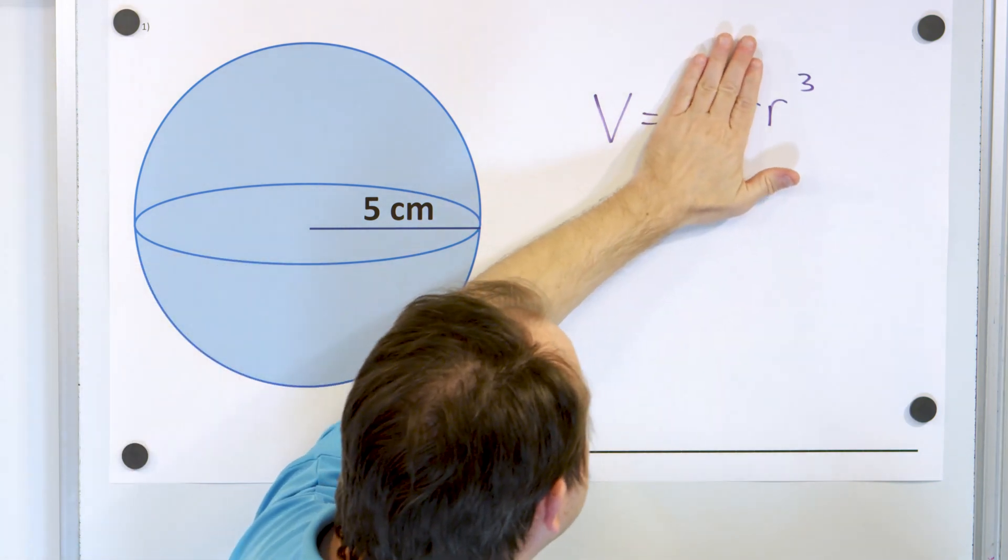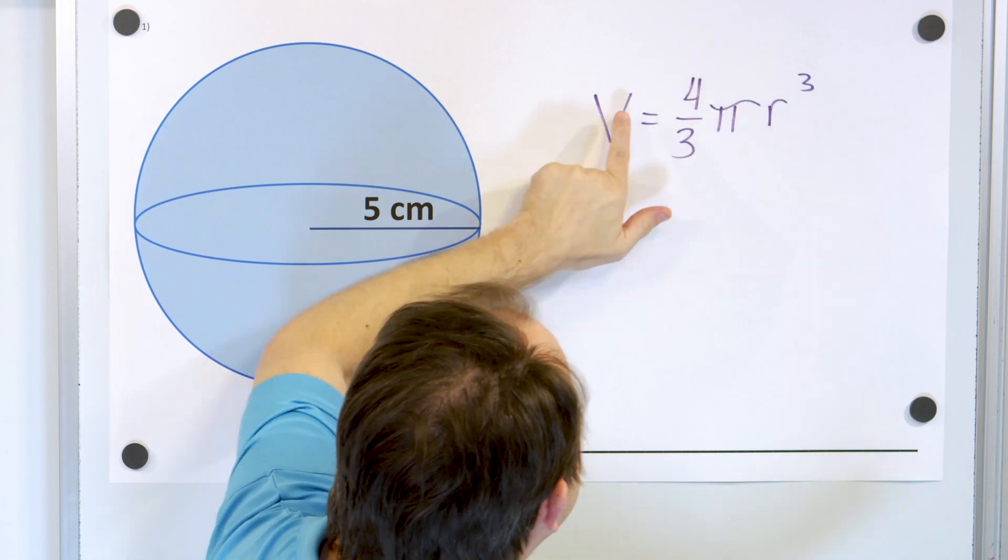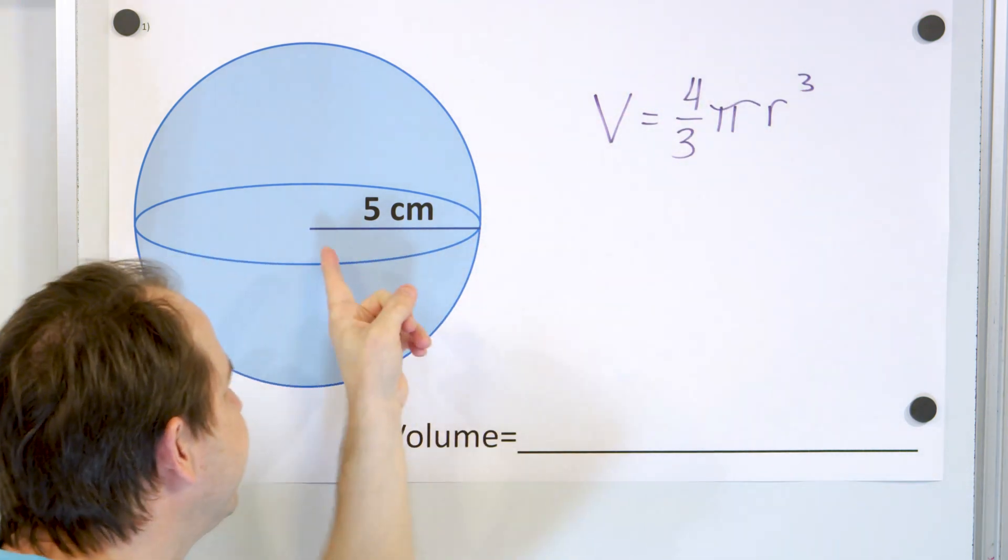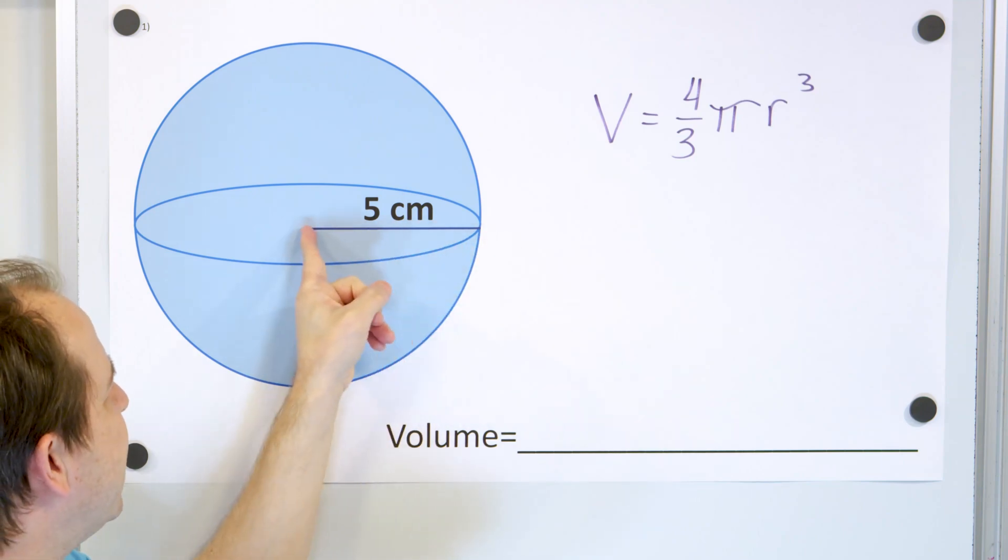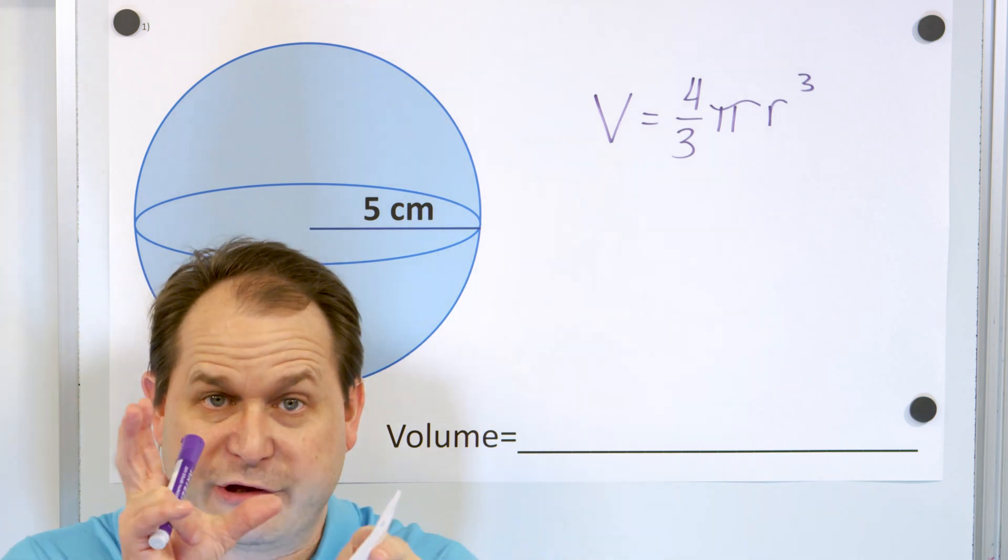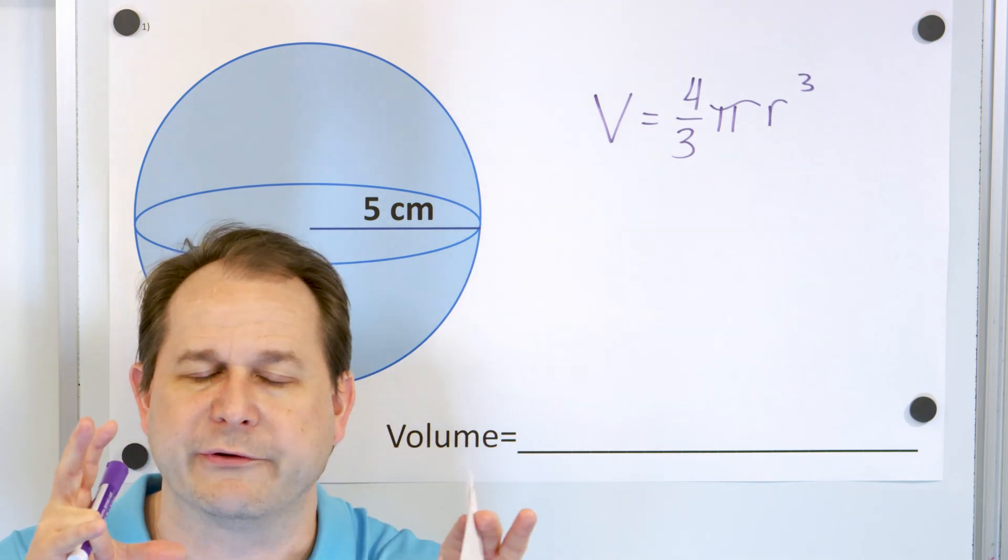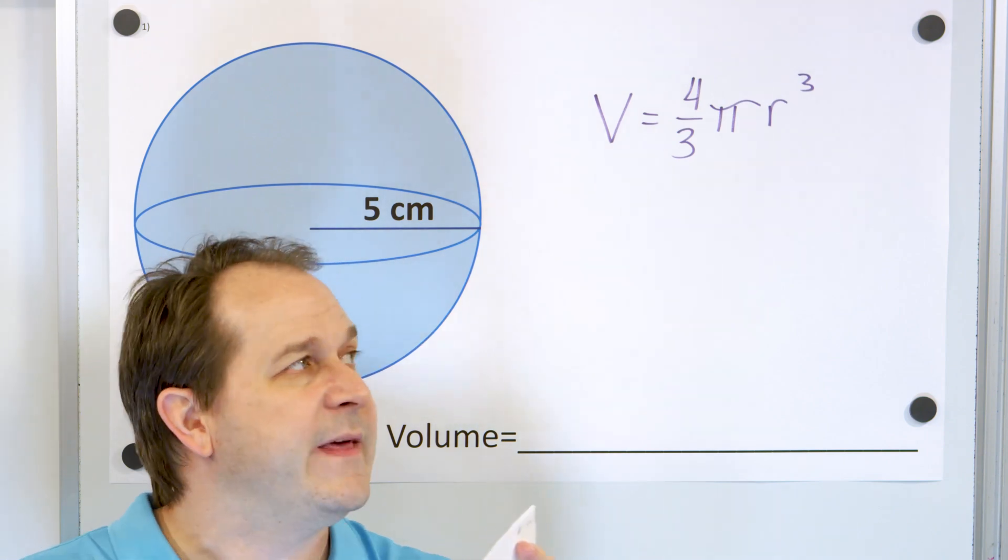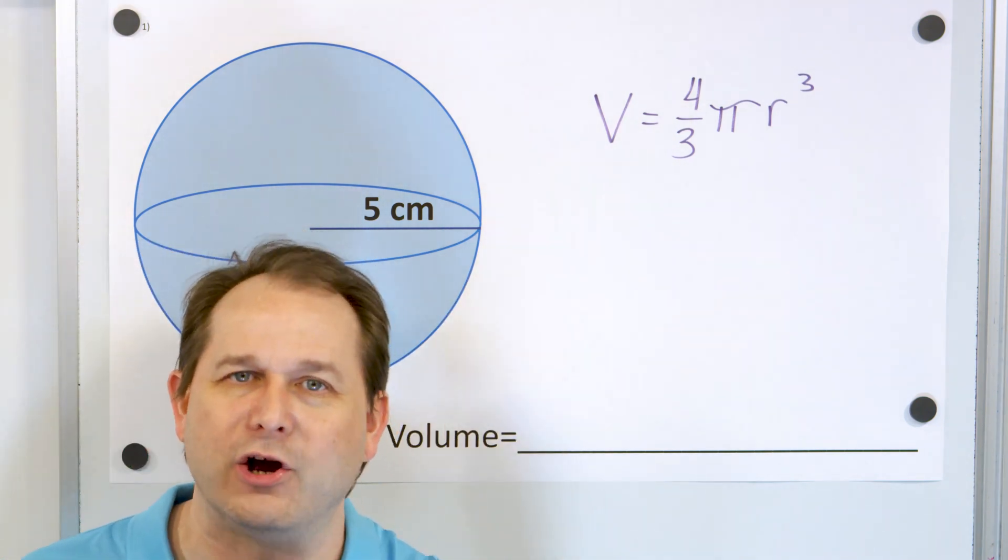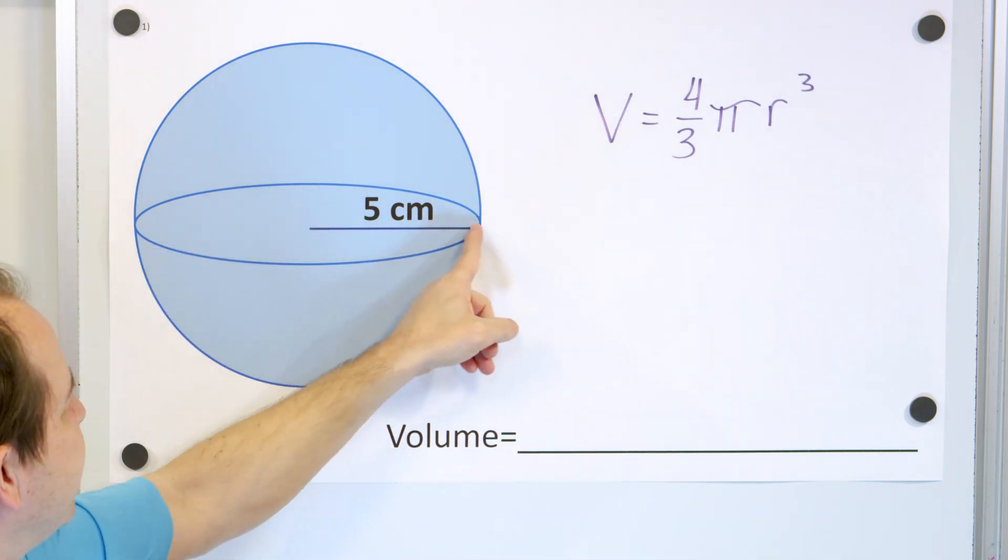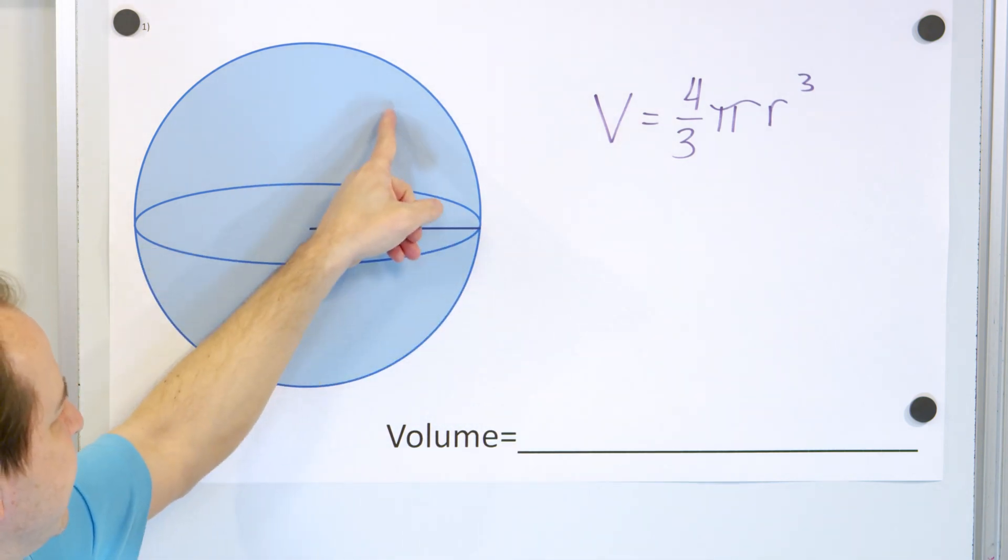Alright, so if you cover up the 4 thirds and the pi, you can see that the volume here is proportional to the radius cubed. So the radius is just a straight line from the center to the edge. If you think about a cube, where each edge of it has a length r, then r cubed is r times r times r. That's the volume of some cube that has one side of it, or all three sides of it, the same length, in this case 5 centimeters.